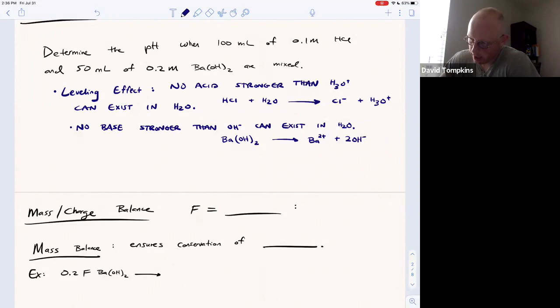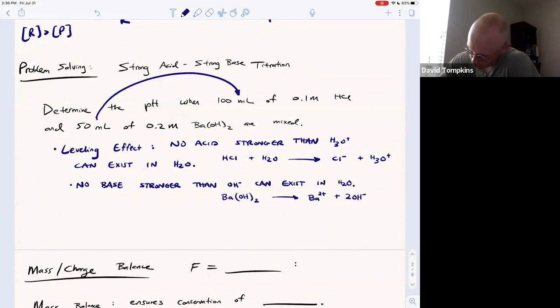So in this problem, determining the pH, we have a mixture of 100 mL from one solution and 50 mL from another solution. Whenever you're mixing volumes, that means the increase in volume will lead to a decrease in molarity. The molarities are 0.1 and 0.2, and they will change. It is best to work these problems in moles or millimoles.